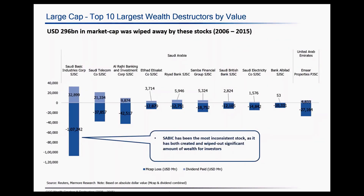Now we come to the section where we have identified the top 10 wealth destructors in the large cap segment, measured by the value they have destroyed. SABIC makes it to this list as well. During its high performance years it created wealth in excess of 100 billion for investors; however, during its downturn it destroyed close to about 1 trillion in terms of market cap. This was partially compensated by close to about 32 billion paid in dividends. Most of the companies in this segment are from Saudi Arabia, with just one from UAE — EMAAR Properties — whose market cap destruction is largely attributed to the Dubai real estate bubble burst.